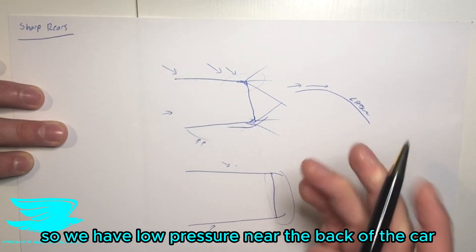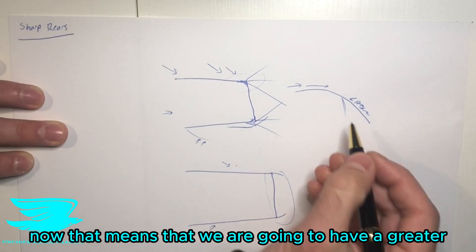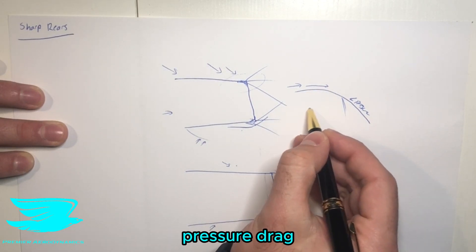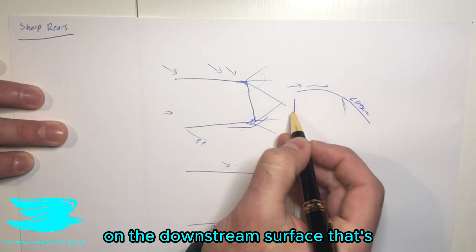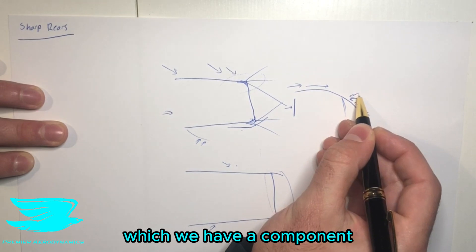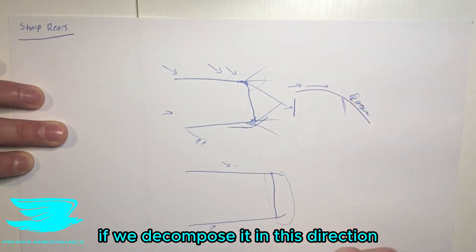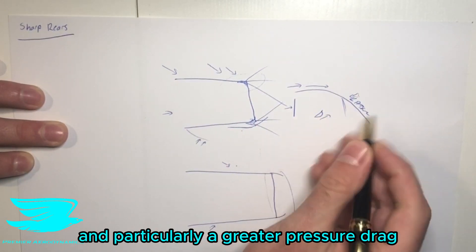That means that we get low pressure back here, low pressure near the back of the car and on the rear-facing surface. Now that means that we are going to have a greater pressure drag because we have a higher pressure upstream on the upstream surface going this way, and low pressure on this surface, which we have a component if we decompose it in this direction. So that means we have a greater imbalance in the pressures, which means a greater drag, and particularly greater pressure drag.